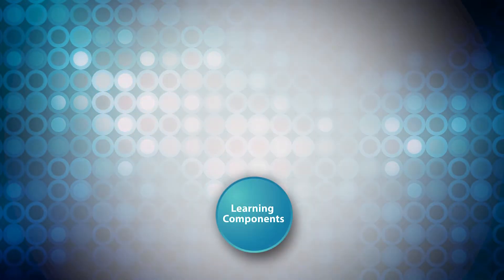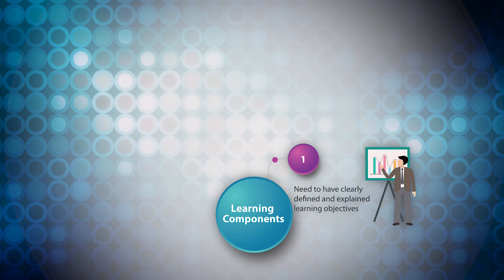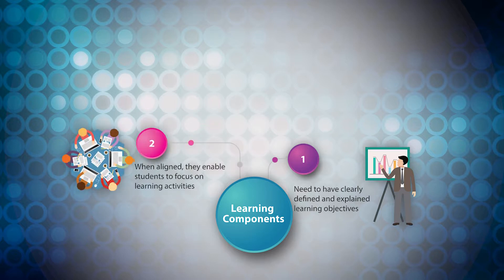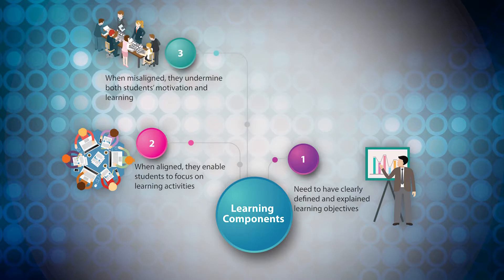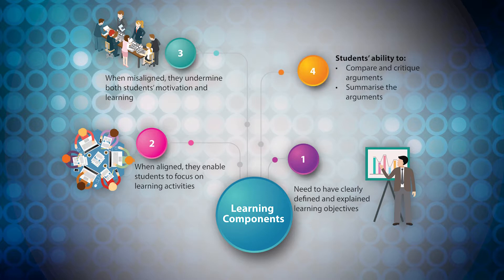What if the components of a course are misaligned? Clearly defined and explained learning objectives enable students to focus their learning activities. If assessments are misaligned with learning objectives or instructional strategies, it can undermine both students' motivation and learning. For example, if your assessment is designed to measure students' ability to compare and critique the arguments of different authors, but you focus entirely on summarising those arguments, students do not learn or practice the skills to compare and evaluate that will be assessed.